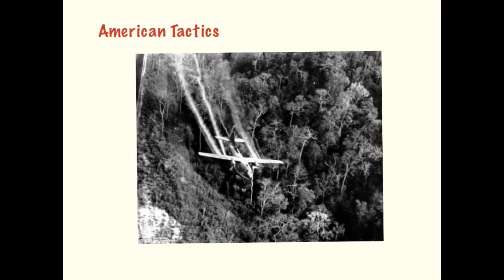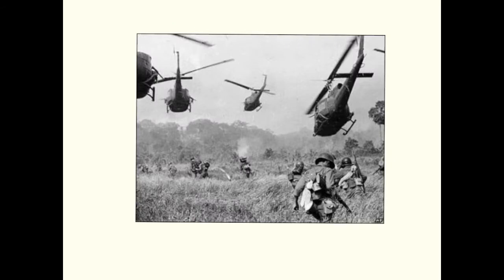The American army used several tactics during the war. The first was chemical bombs. The Americans dropped chemical bombs to destroy trees, resulting in defoliation — the trees were stripped of their leaves. This allowed US helicopters to spot the enemy more easily.